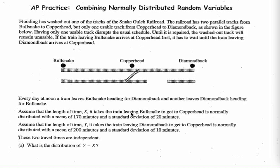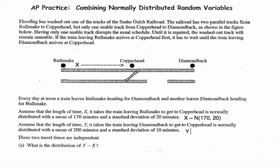X represents the travel time for the train from Bullsnake. You should be familiar with this notation: X is distributed normally with a mean of 170 minutes and a standard deviation of 20 minutes — X is the travel time approaching Copperhead. The train from Diamondback has travel time Y, also normally distributed with a mean of 200 minutes and a standard deviation of 10 minutes.